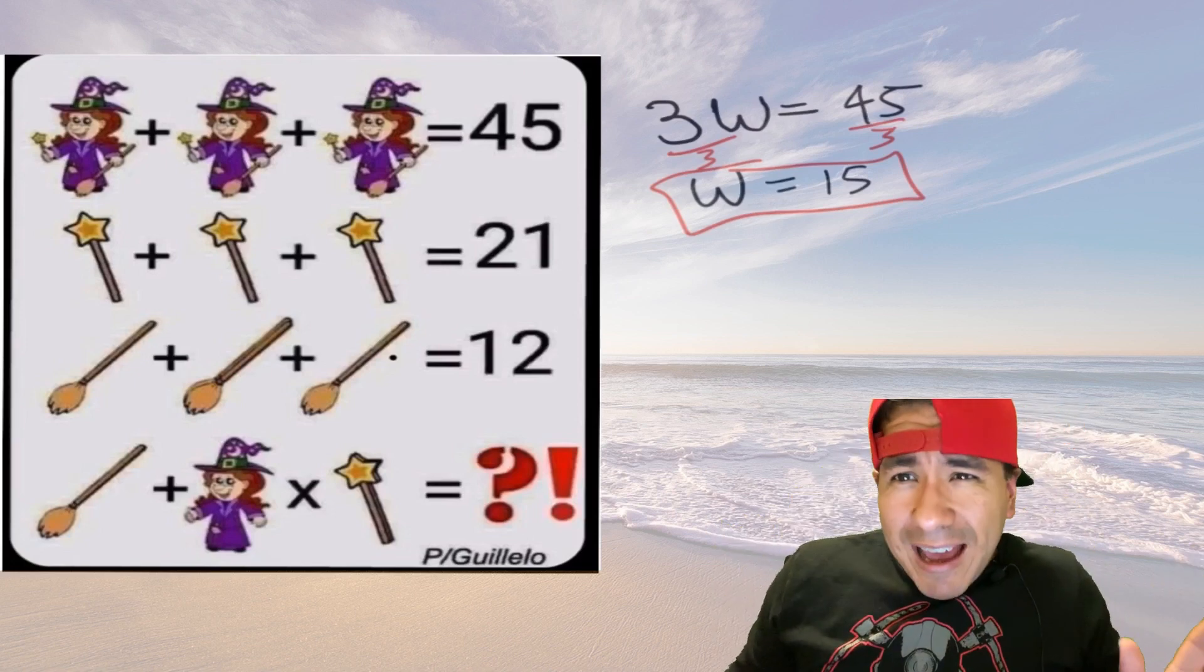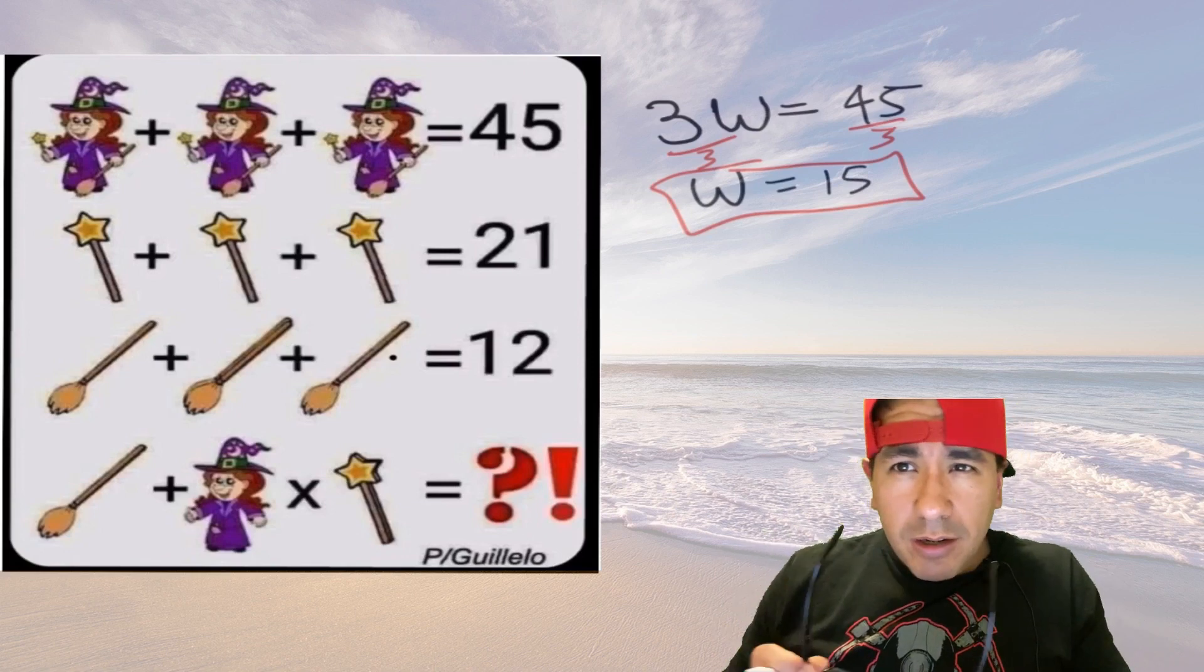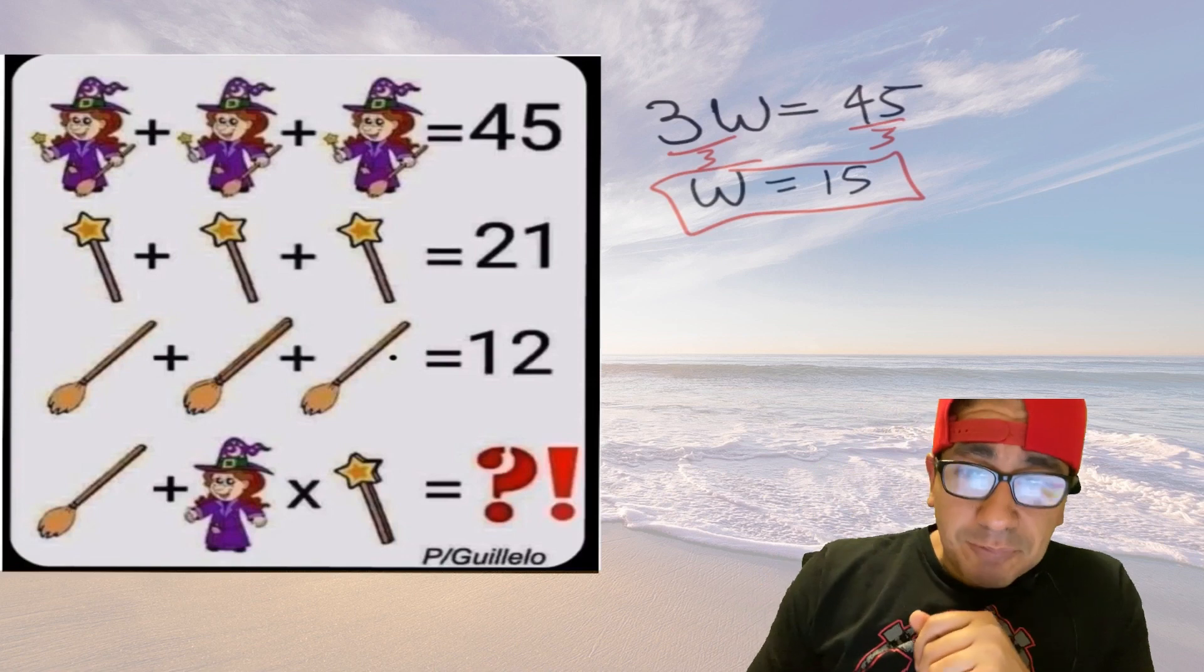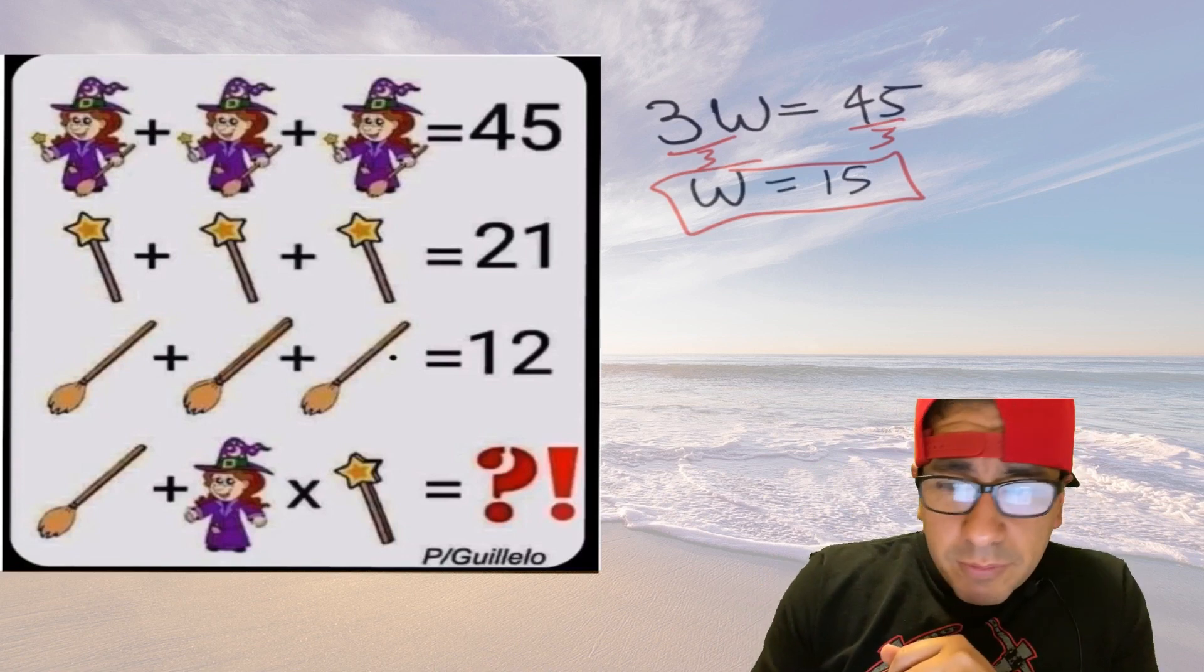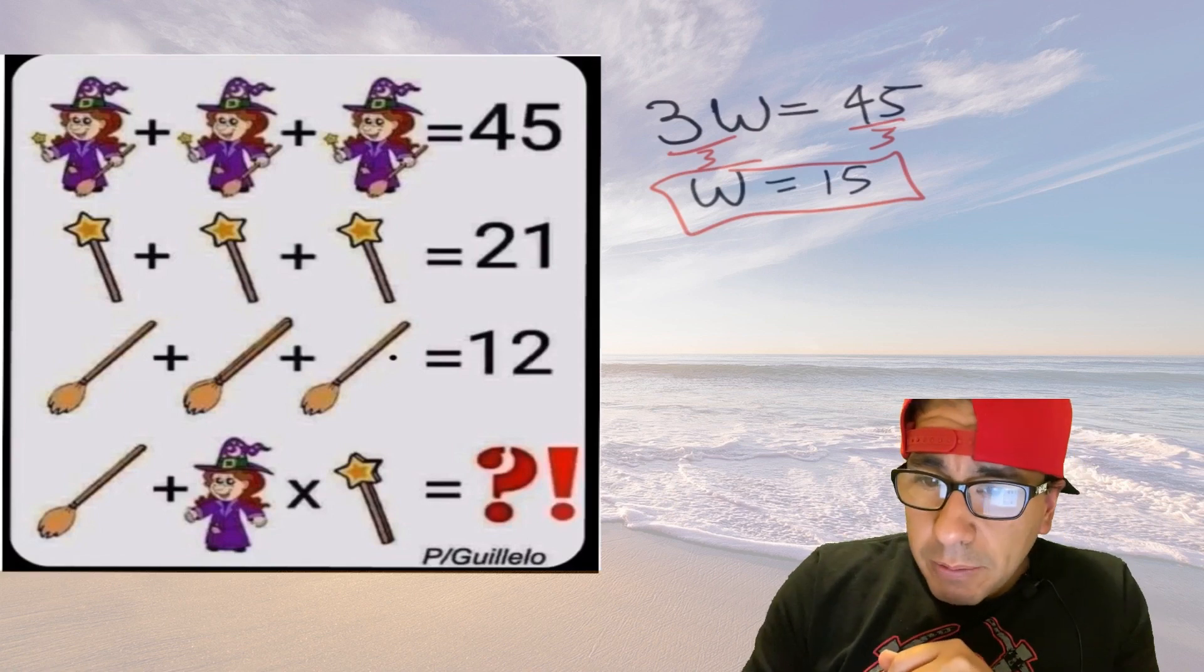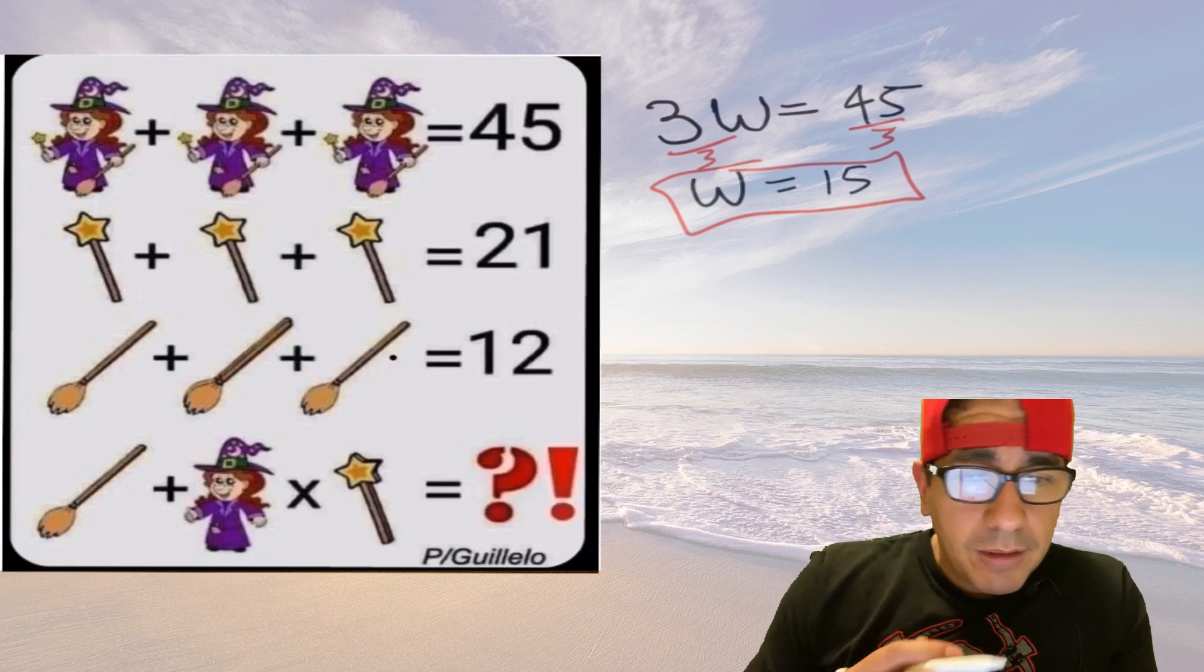Next we saw three brooms, uno dos tres, that's French, three brooms. No they're not brooms, I know what people are saying, you idiot those aren't brooms those are wands.